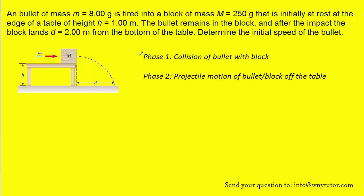In phase one, we have the collision of the bullet with the block, and then in phase two, there's a projectile motion of the bullet block off the edge of the table. We're actually going to deal with phase two first, and then come back later to phase one.